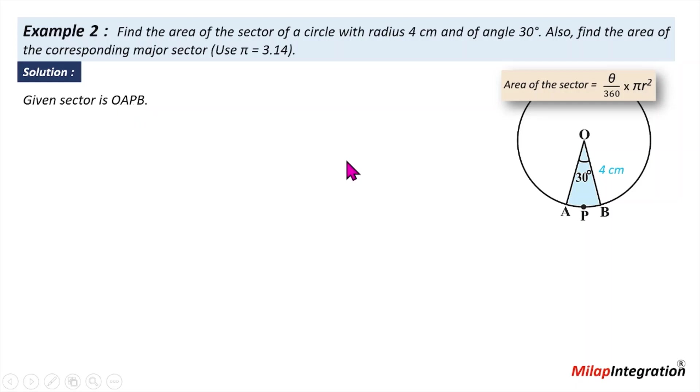So how will we write? We will write this way. Given sector O, A, P, B. We don't say O, A, B. Why do we say O, A, P, B? If I say O, A, B, it can be a major sector. Because we are talking minor sector, we have taken a point so that confusion will not be.